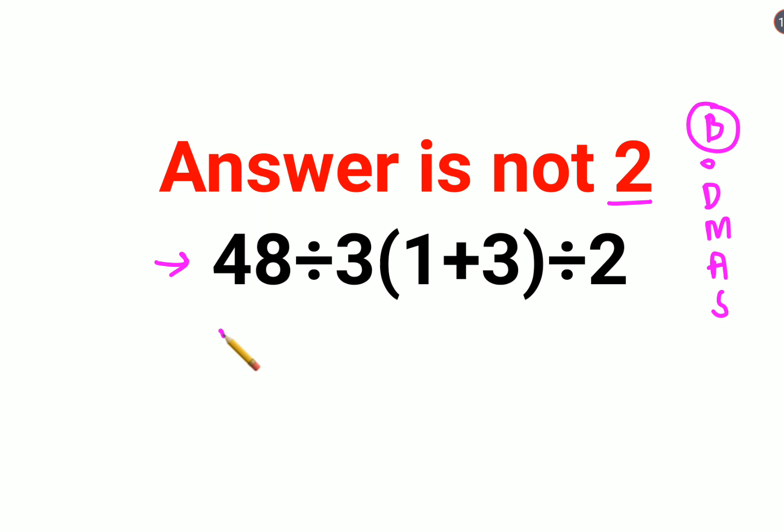First we have 48 divided by 3. There's nothing between 3 and this bracket, so that means it has to be multiplied. You have the bracket which is 1 plus 3 that gets to 4, divided by 2.